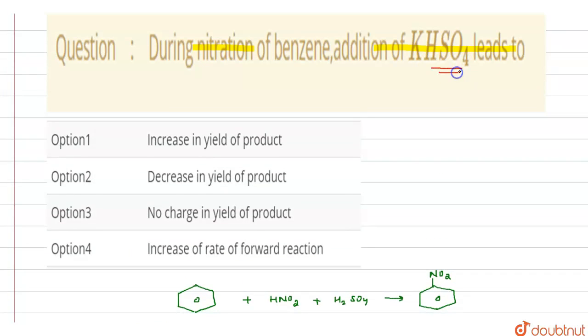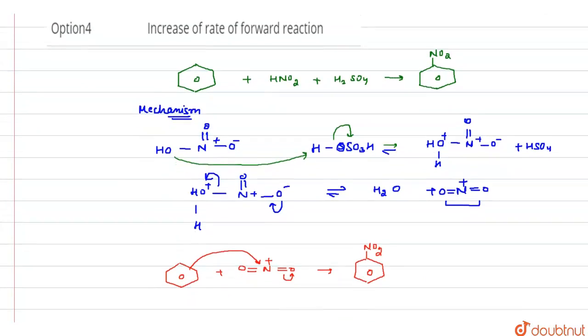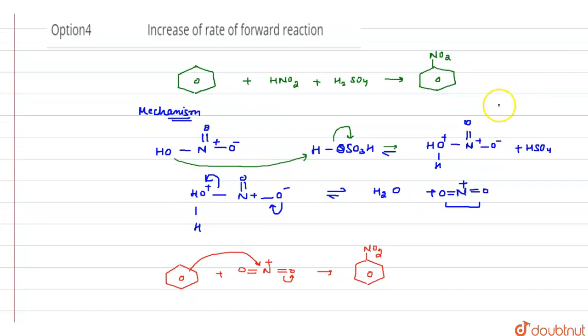So when addition of KHSO4 takes place, we see here on the right-hand side HSO4 is present. And when we add KHSO4, which is basically K plus and HSO4 minus, then common ion effect takes place. These are common ions.